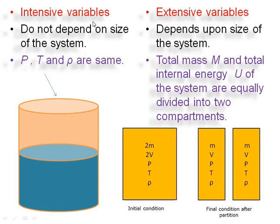These variables are of two types: the first is intensive variables and the second is extensive variables. Intensive variables do not depend upon the size of the system. Variables like pressure, temperature, and density are the same throughout the system. If the system is divided into compartments, the pressure, temperature, and density remain the same. Therefore, these are the intensive variables.